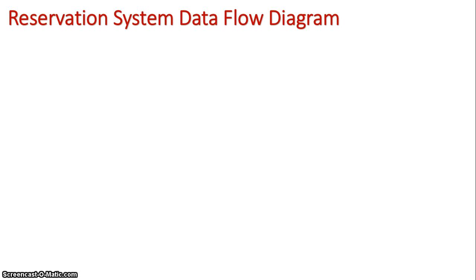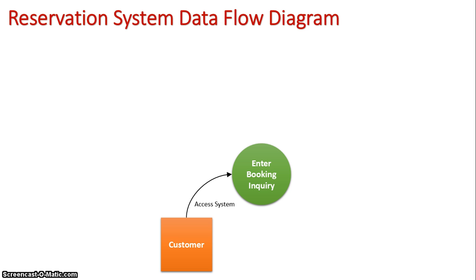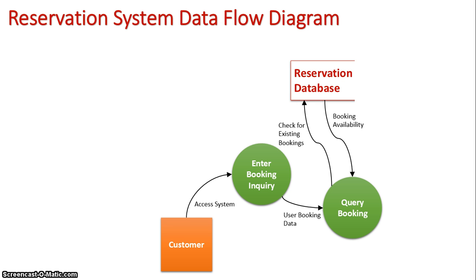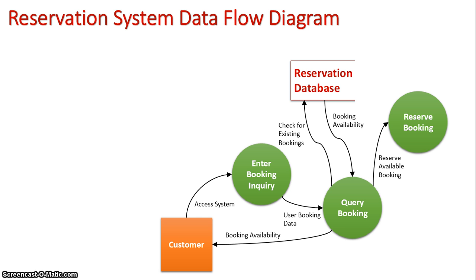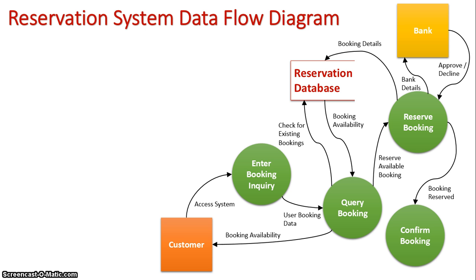From a data flow diagram standpoint, we have the customer accessing the system and entering their booking inquiry. This inquiry is queried against the reservation database, and booking availability is returned to the customer. If a booking is available, the customer can reserve it. That reservation request goes through the bank where it gets approved or declined, just as seen in the context diagram. If all is okay, the booking gets locked into the reservation database and a confirmation is sent back to the customer.